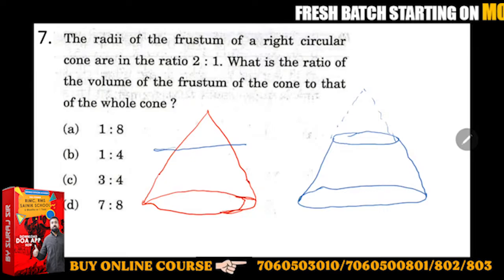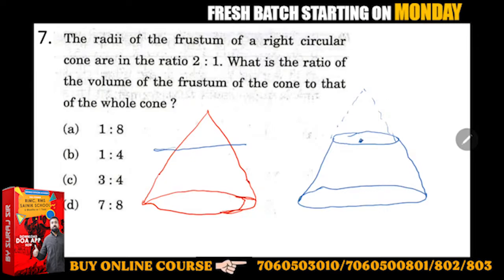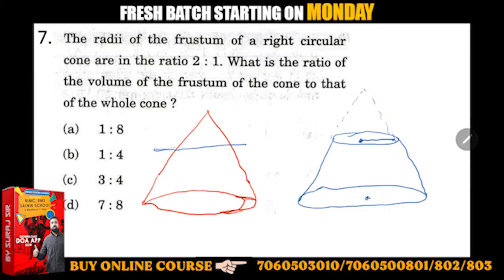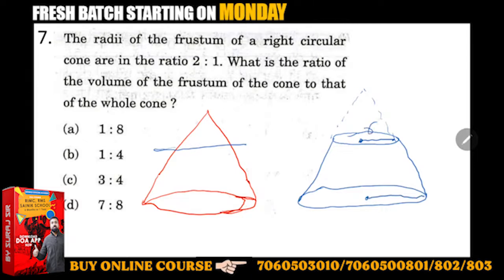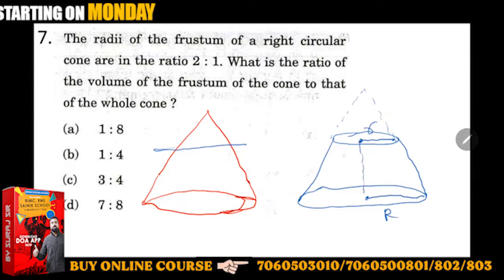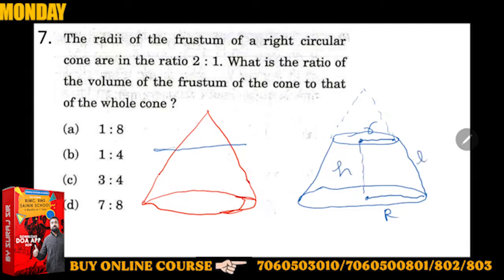The radius is different at each end - this is small r and capital R. This height is h and the slant height is l.